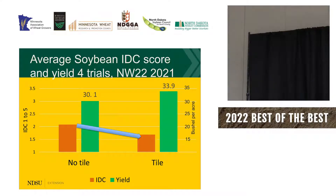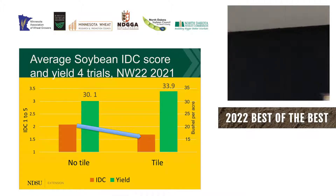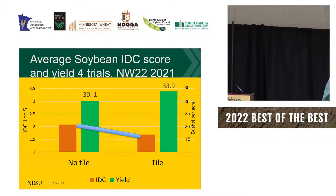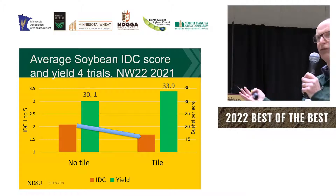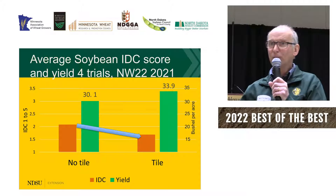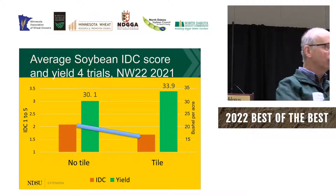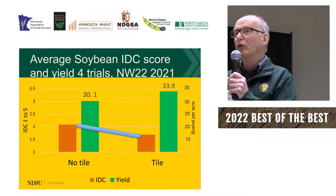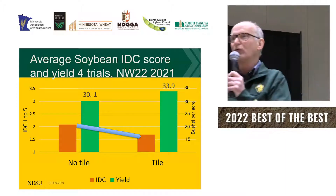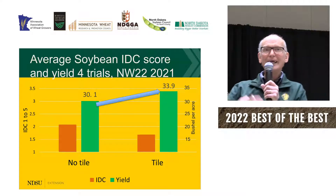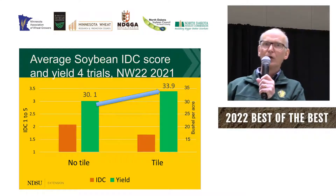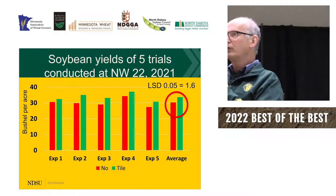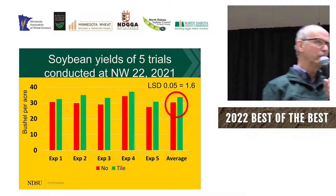The IDC score on the no-tile was higher than on the tile. Why? I installed the tile around 2008 in clay soil — it's salty. Over time rain events washed water through the profile, so we had less salt there, and salt is one of the factors that affects IDC. We saw this residual salt effect on the no-tile compared to the tile where it was reduced. What it did to yield is it increased the yield on the tile plot — tile never ran but still had a yield increase.